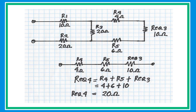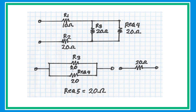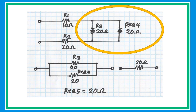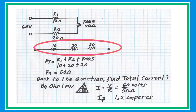Collapse the circuit and redraw again to simplify. In the new redrawn circuit, R3 and R4 are connected in parallel with the same value — take half to get an equivalent resistance of 20 ohms. In the final circuit, R1, R2, and R_eq are now simplified in a series circuit. Simply add the three resistors to get a total equivalent resistance of 50 ohms.